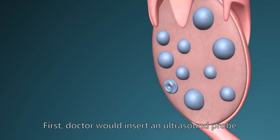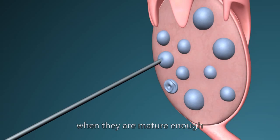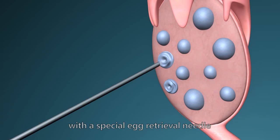First, doctors would insert an ultrasound probe into the vagina to observe the follicles. When they are mature enough, eggs will be removed with a special egg retrieval needle.